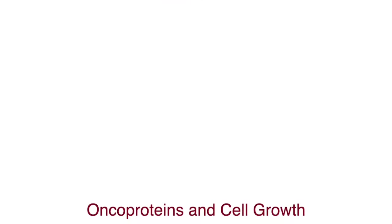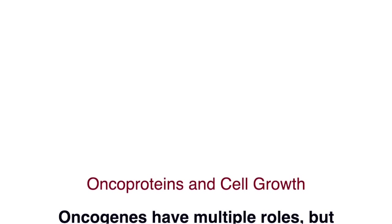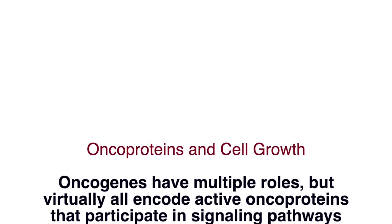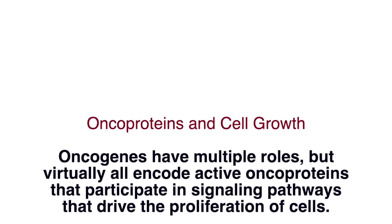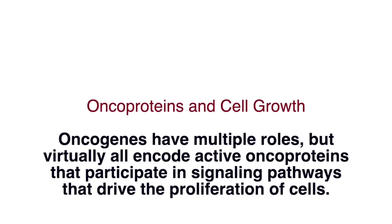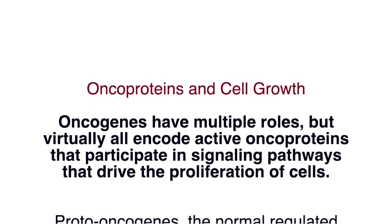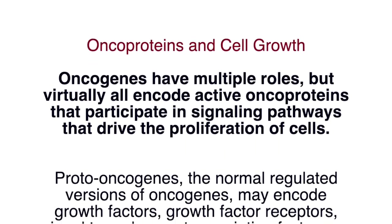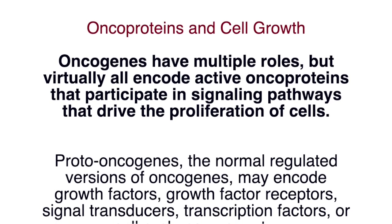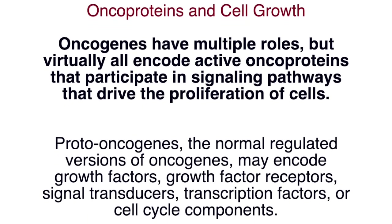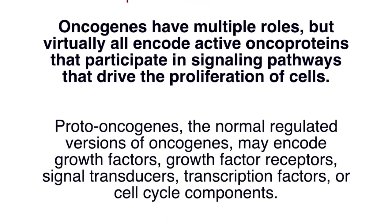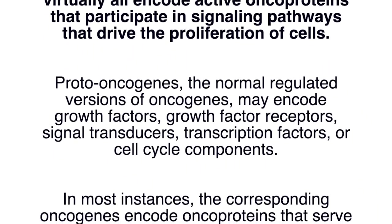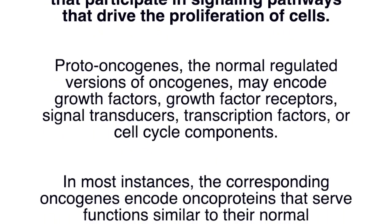Oncogenes have multiple roles but virtually all encode active oncoproteins that participate in signaling pathways that drive the proliferation of cells. Proto-oncogenes — the normal regulated versions of oncogenes — may encode growth factors, growth factor receptors, signal transducers, transcription factors, or cell cycle components.